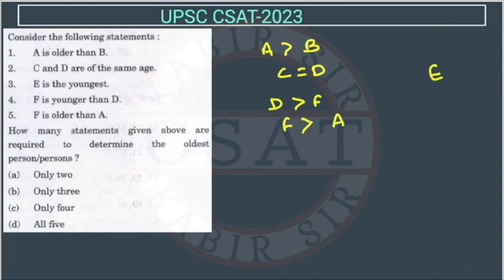Now, how many statements given above are required to determine the oldest person? So we want the oldest person. Suppose we are taking these two, we do not know the relationship between. If we are taking these, we will get that F is the oldest from this one.